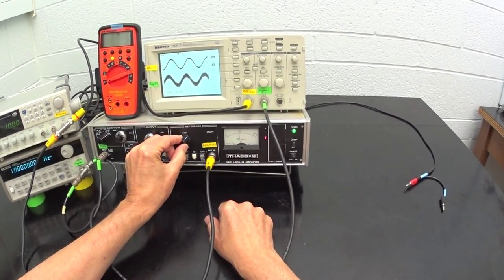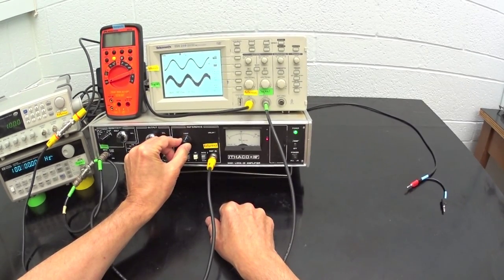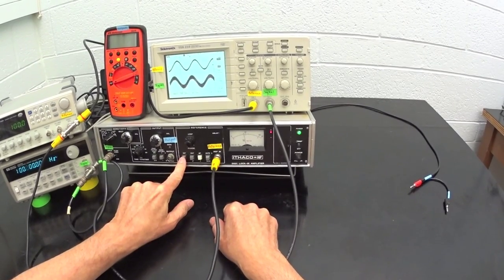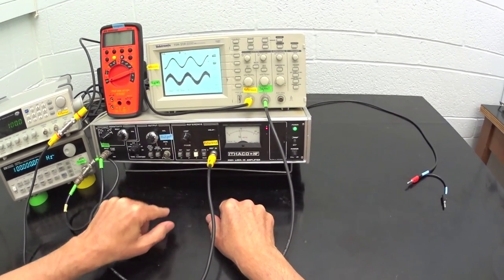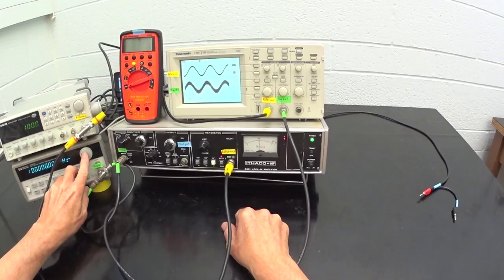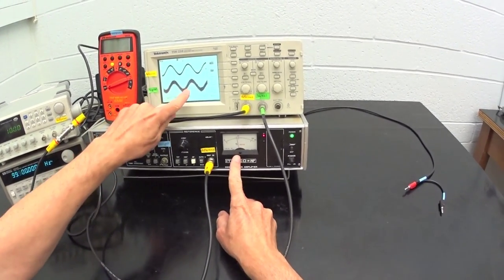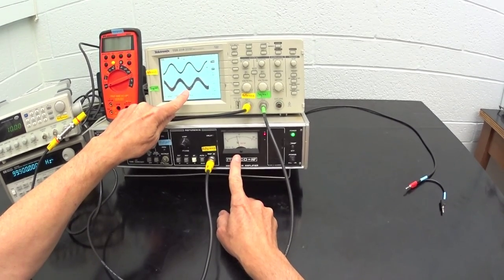The phase knob allows us to make fine adjustments to the phase, so any phase between 0 and 360 degrees can be reached. This lock-in also has an auto phase button, which, when pressed, automatically tries to adjust the phase to achieve maximum output amplitude. This can be very helpful, but I usually check it manually, and note, however, that the auto phase can't track the phase if it varies too quickly.